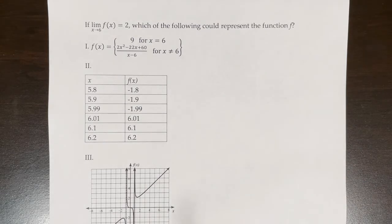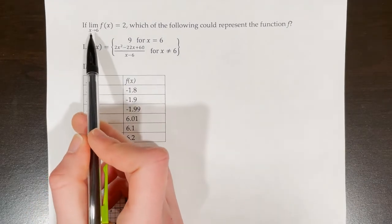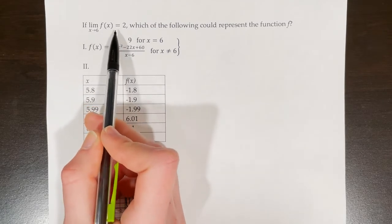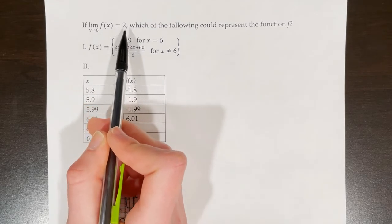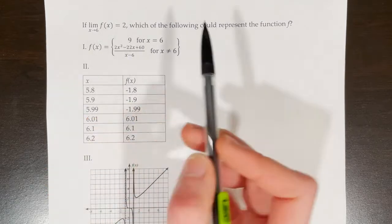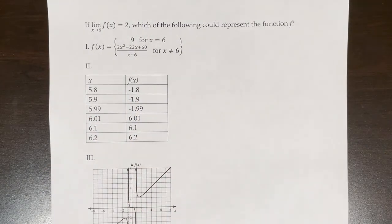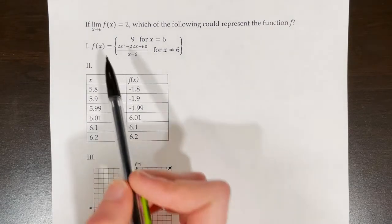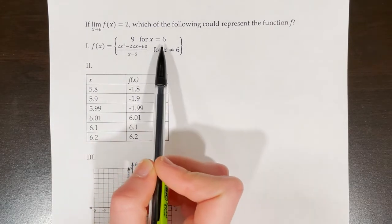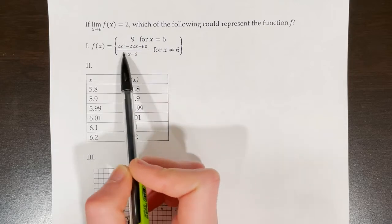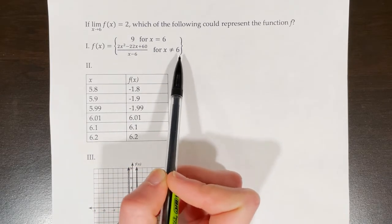In this specific question, we're being asked to find the limit of f of x as x approaches 6, and determine if that's equal to 2. For this first function, we have a piecewise function: f of x equals 9 when x equals 6, and f of x equals this rational function when x is not equal to 6.